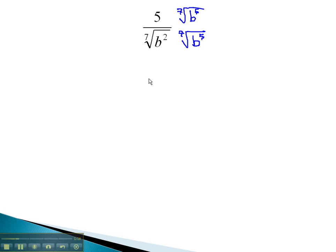As we do this, we now have 5 times the 7th root of b to the 5th over...when we multiply these together, we have b to the 7th. Dividing that by the index, we just have a b coming out of the radical.